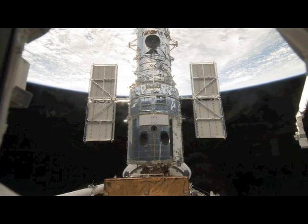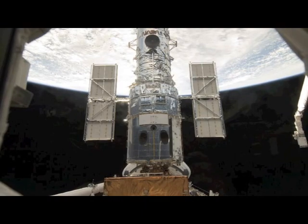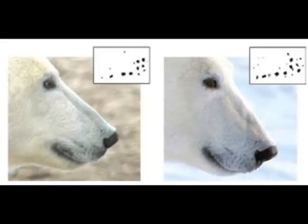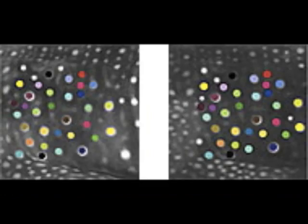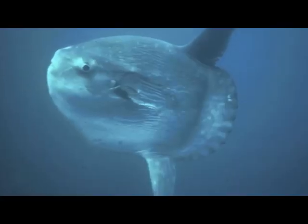This process can also be used to track animals that have unique spot patterns, such as polar bears with their whisker spots and whale sharks with their spots in the skin. There are plans to use this process to track animals such as polar bears, whale sharks, and mola mola, the ocean sunfish.